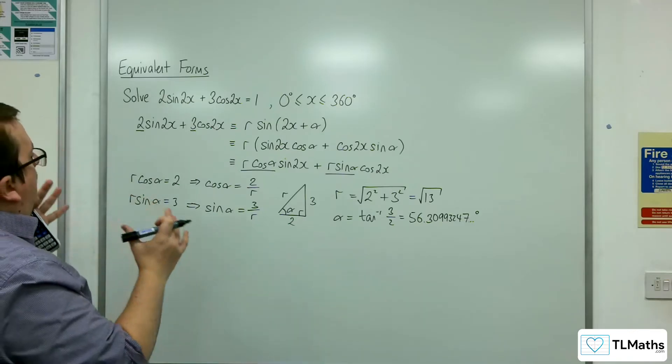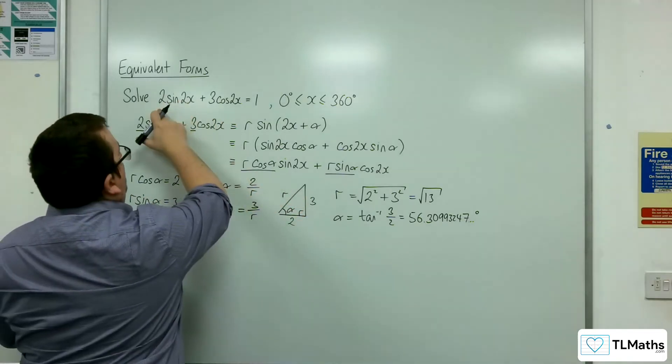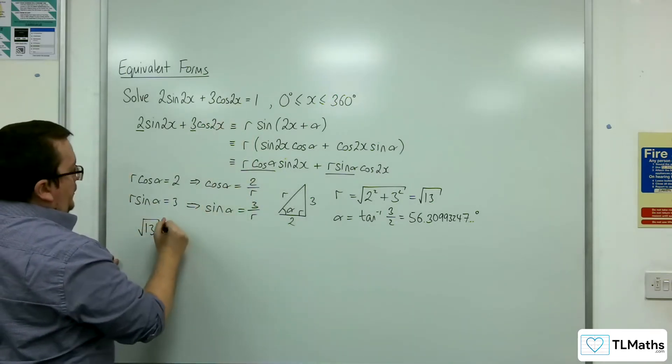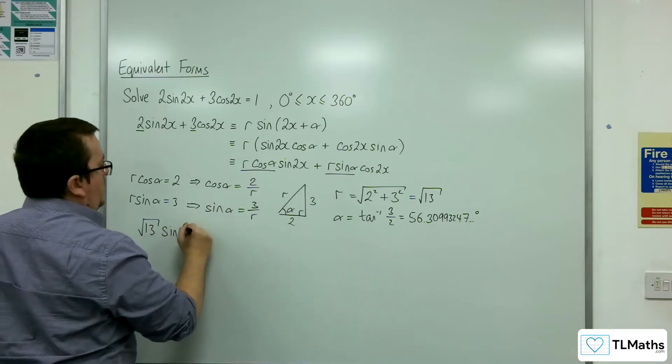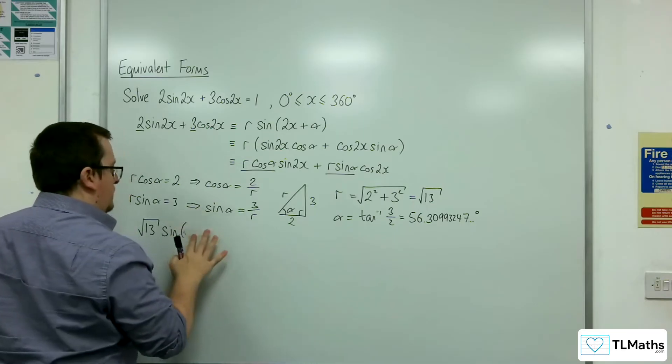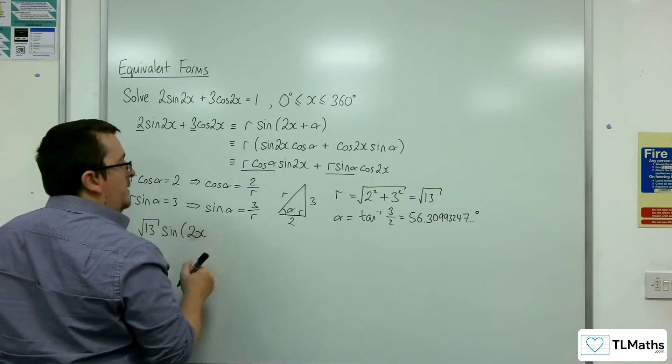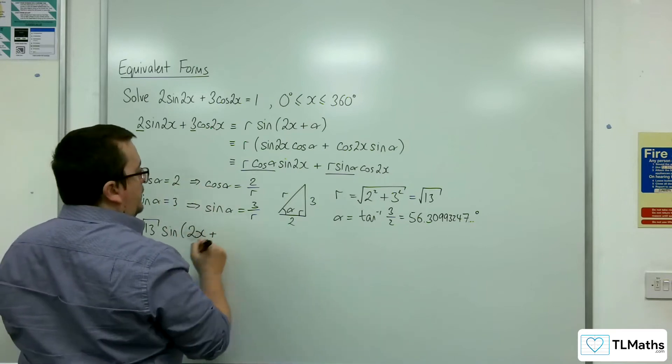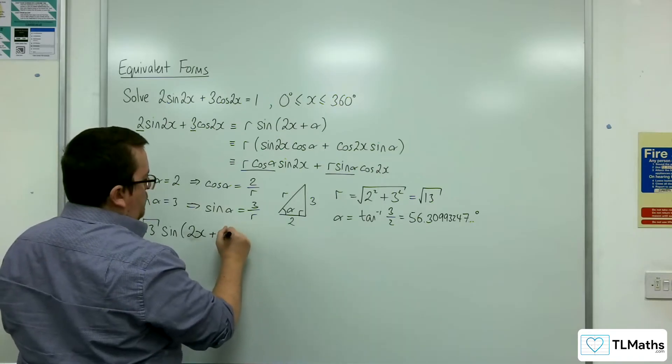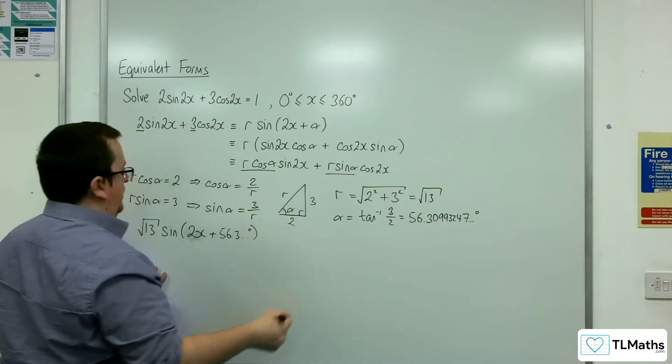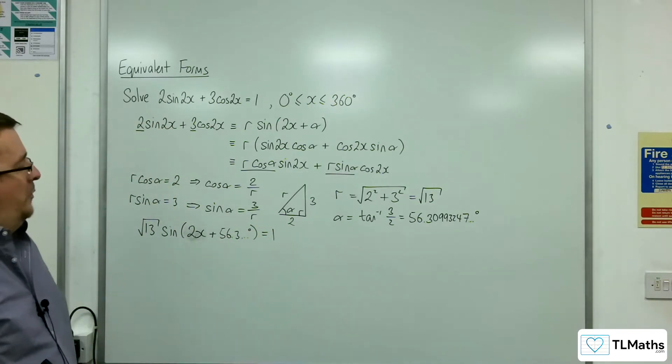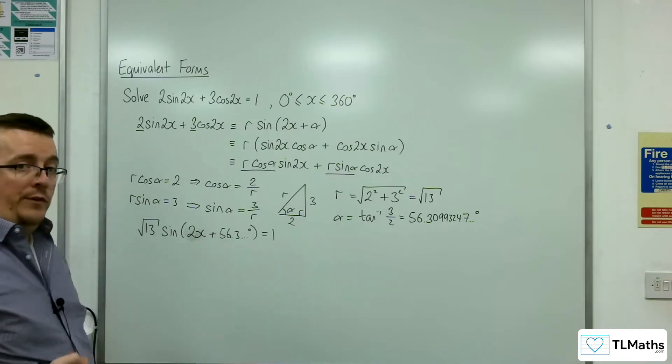Now I can replace the left-hand side with root 13 sine of 2x plus alpha, which is 56.3 etc degrees, and that's got to equal 1. So I now need to solve this equation between 0 and 360. I'm going to divide through by root 13 first.